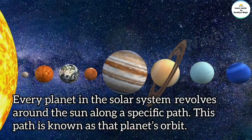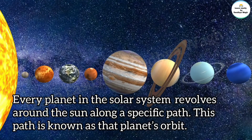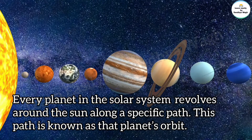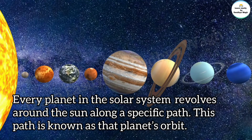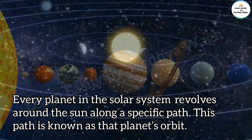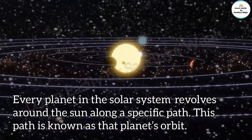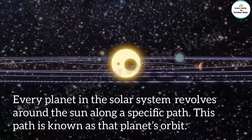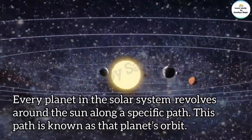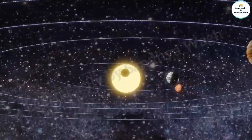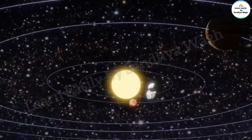The solar system has a total of 8 planets: Mercury, Venus, Earth, Mars, Jupiter, Saturn, Uranus, and Neptune. These planets move along a specific path around the sun. So tell me, what is the definition of orbit? An orbit is the specific path on which the planets move around the sun.